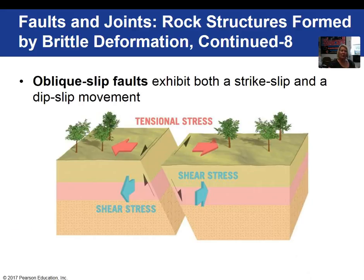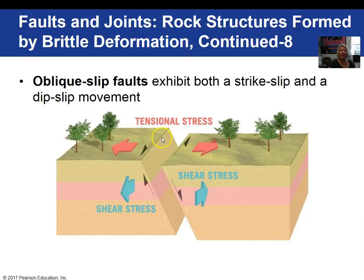Normal faults, reverse faults, and strike-slip faults are grouped together and called dip-slip faults. We can also have oblique-slip faults that have not only strike-slip but dip-slip movement as well, and that becomes a bit more complex in nature.